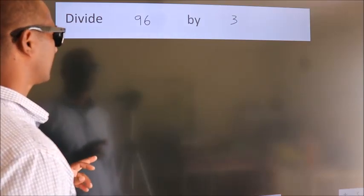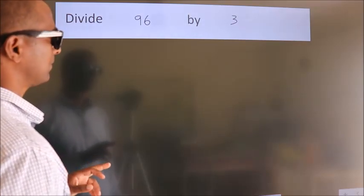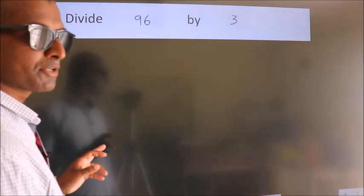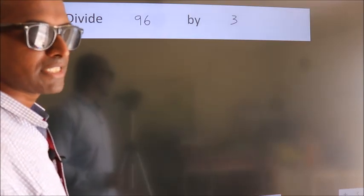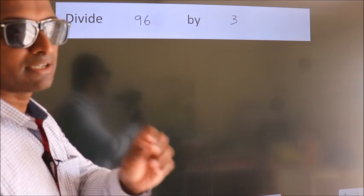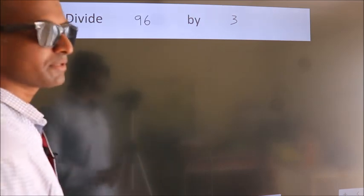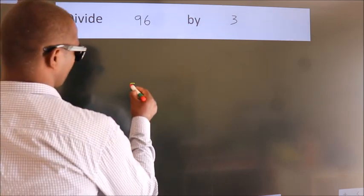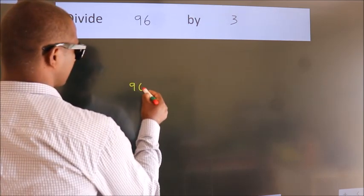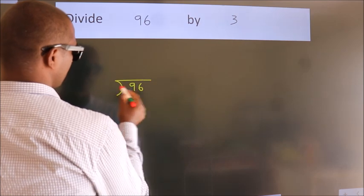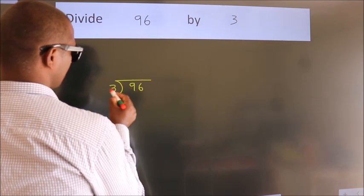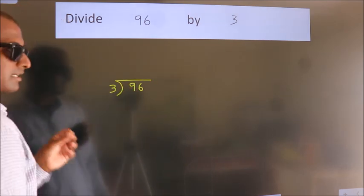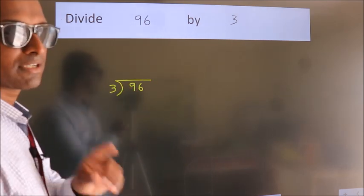Divide 96 by 3. To do this division, we should frame it in this way: 96 here, 3 here. This is your step 1.